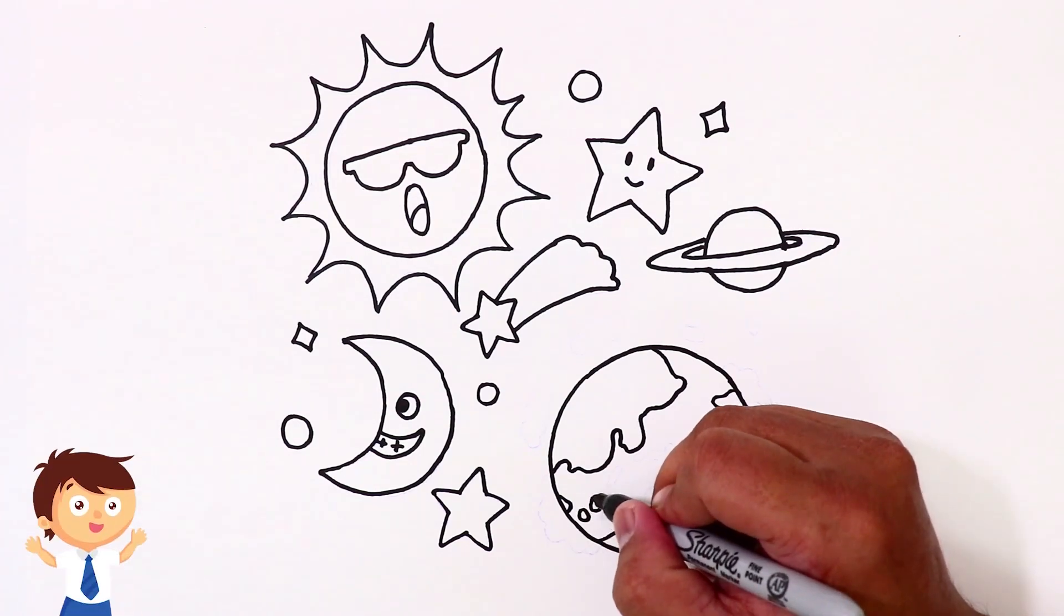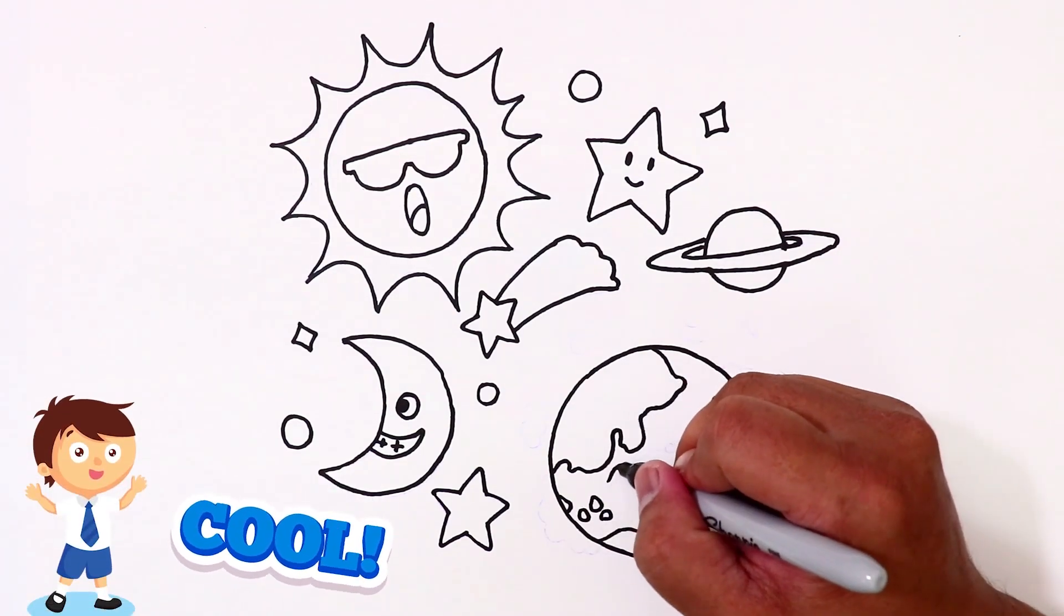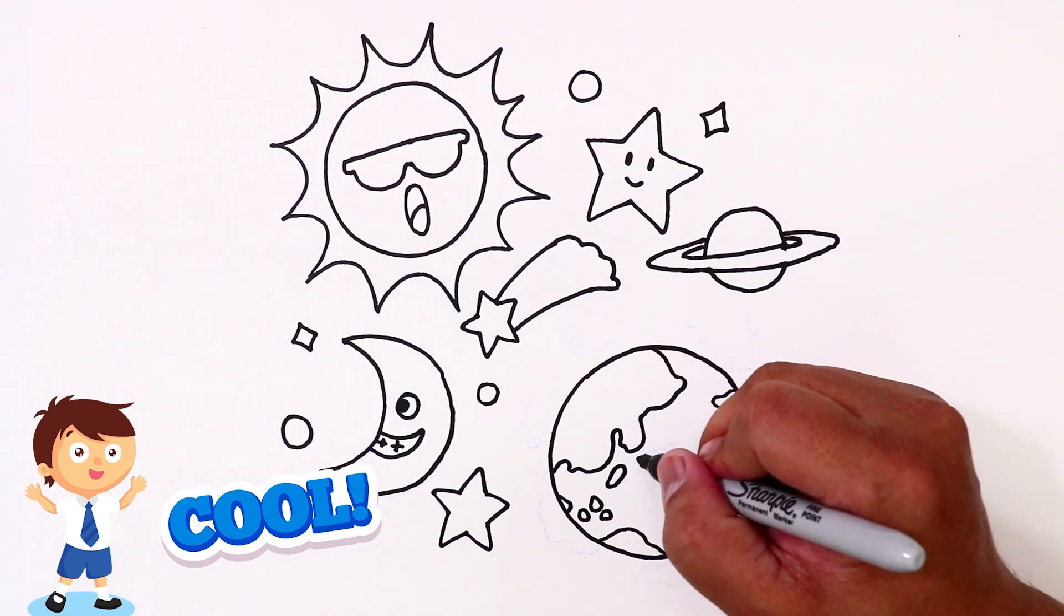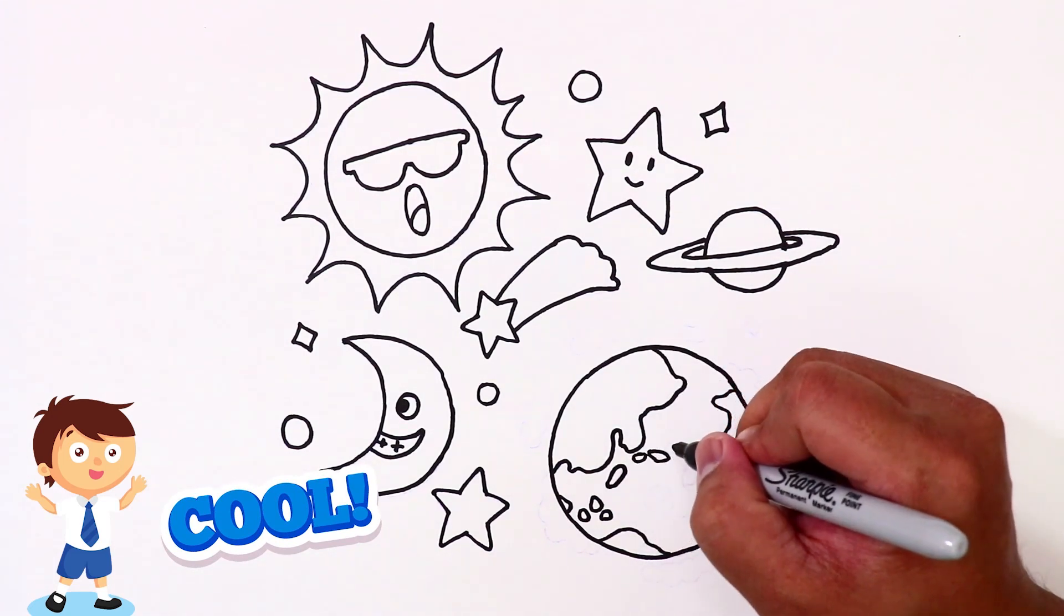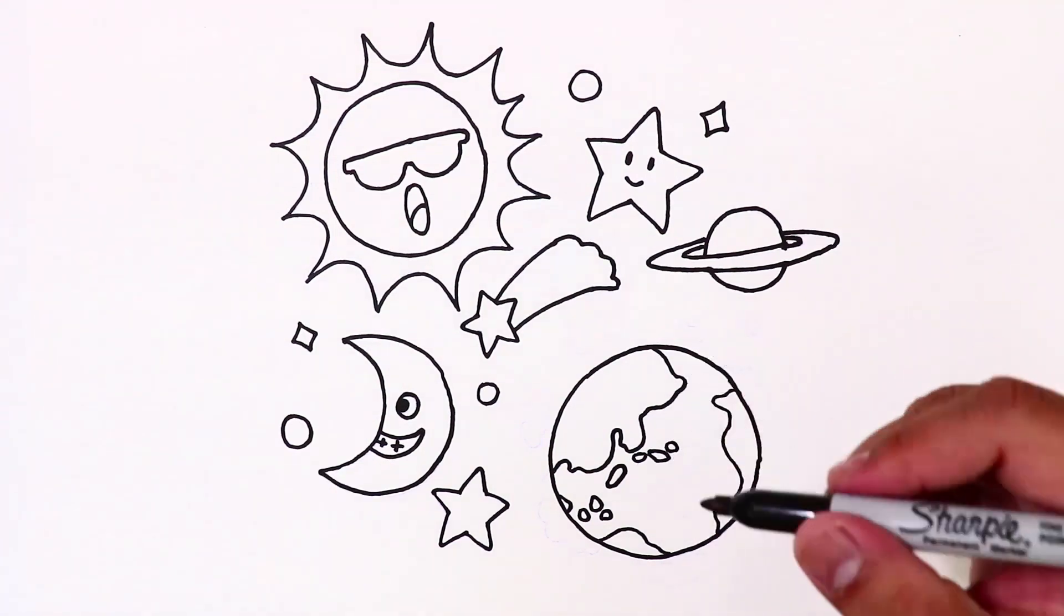How many planets are there in our solar system? There's eight planets in our solar system, of course, and the smallest is Mercury like we talked about. The largest is Jupiter.